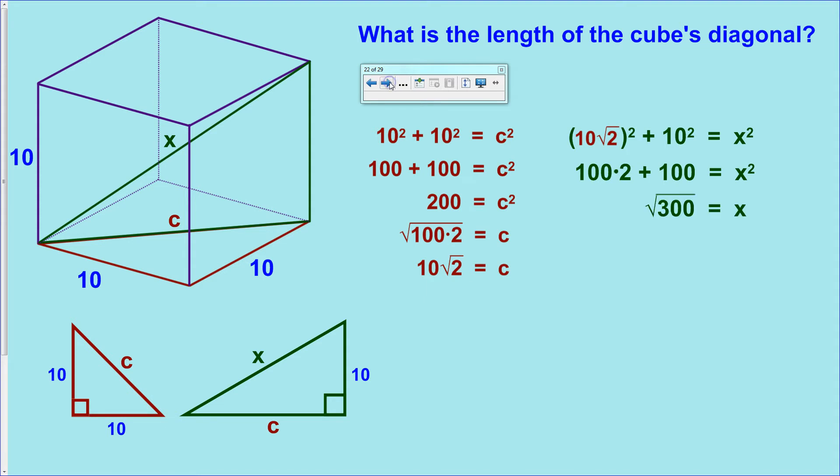Okay, so you get 100 times 2, and then of course 10 squared is 100. From there, simplify, you get down to 300. Take a square root of both sides. And this is, again, another situation where you have to try to find perfect square factors of 300. And just like 200, 300 can be split up into a perfect square factor of 100 times 3. So we're going to split that up into 100 times 3, take the square root of each separately, and you get 10 times the square root of 3 is the length of x.